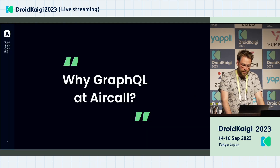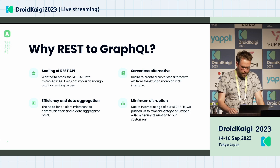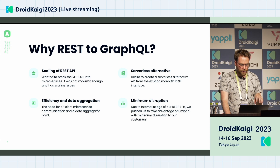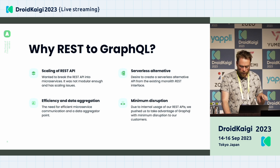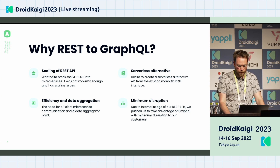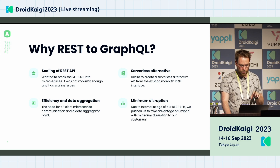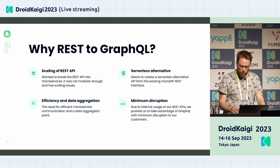So why use GraphQL at Aircall? Our REST API had some scaling issues. We wanted to break our REST API into microservices — it was not modular enough and had scaling issues. Then we wanted a serverless alternative, moving away from our big REST monolith interface. We also needed efficiency in data aggregation, and a minimum disruption due to the internal usage of our REST API.